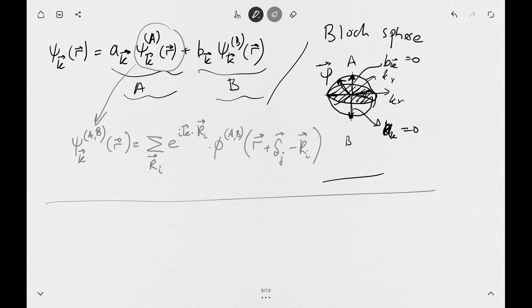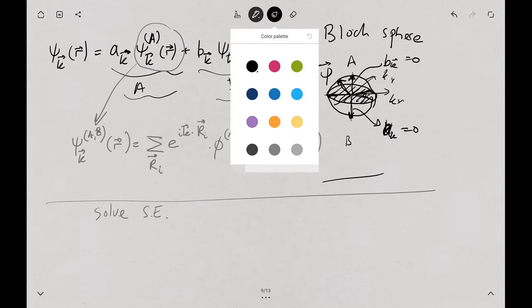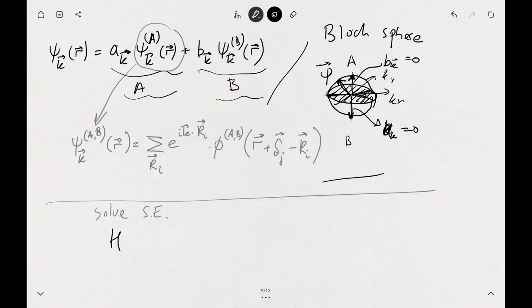We have the wave function, it looks quite messy, and you would need to solve Schrödinger equation: H ψ_k = E_k ψ_k. The solution is quite technical. We'll see if we go through that one in the next video, probably. But I want to give you the intuition what we will get.